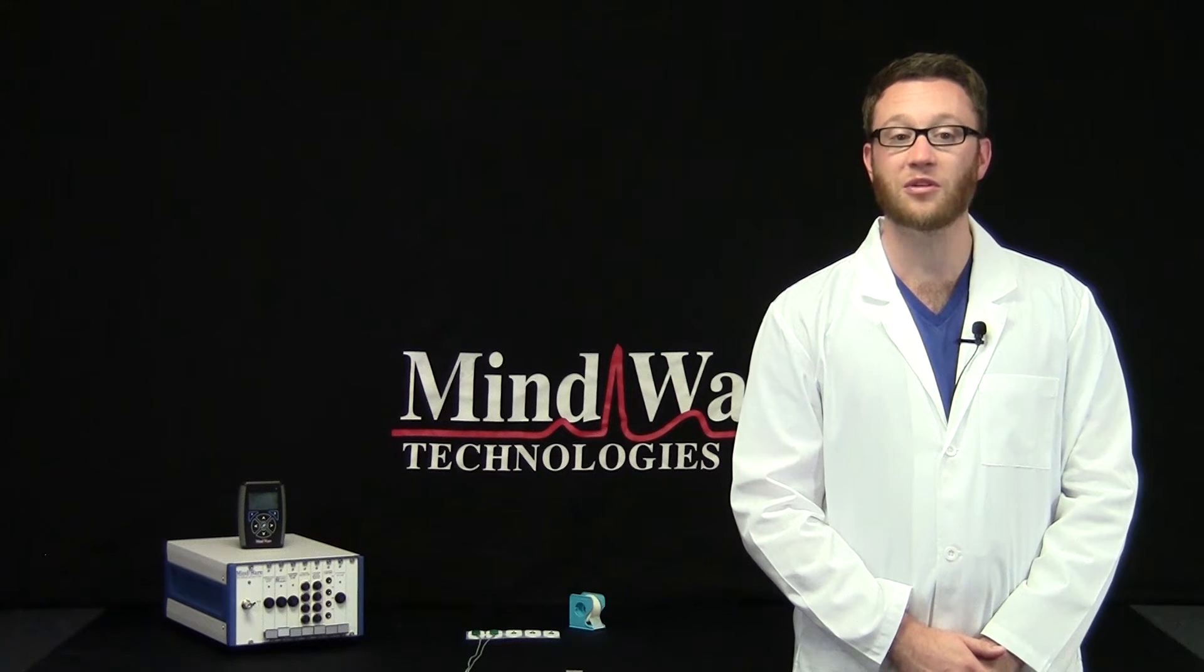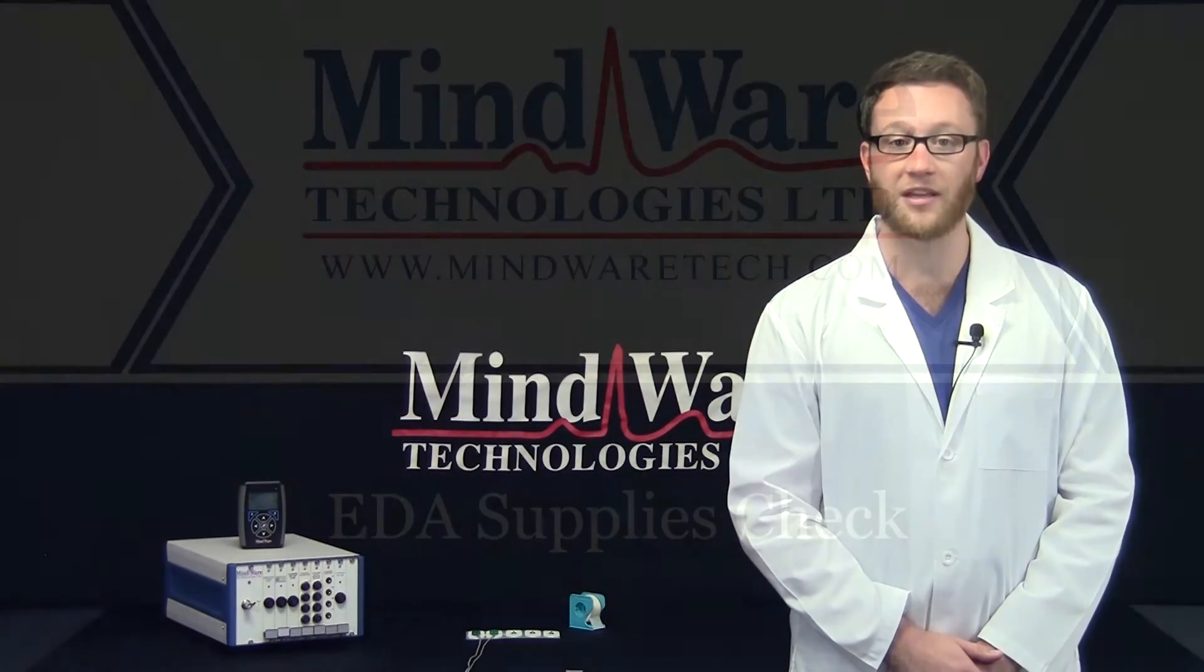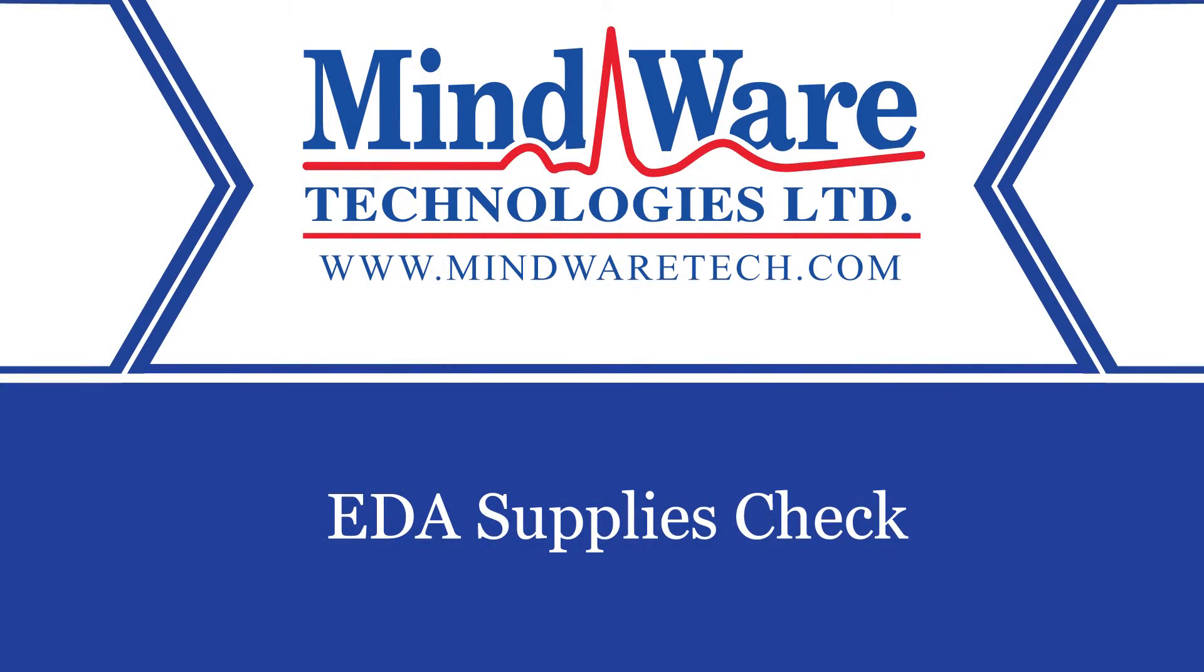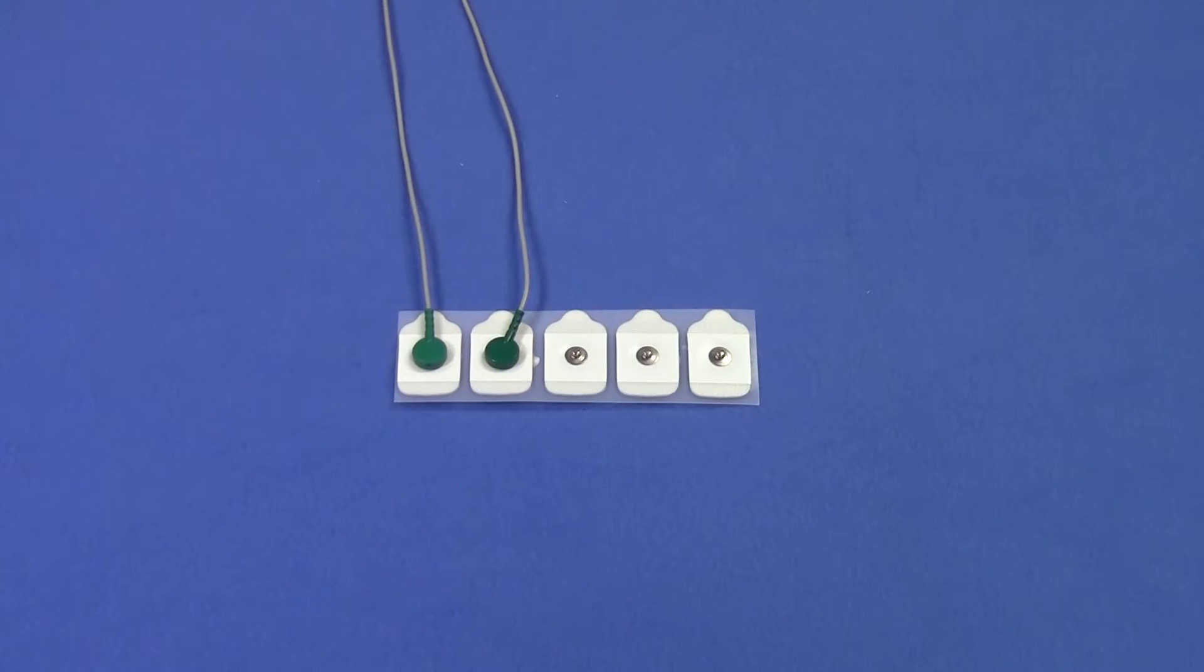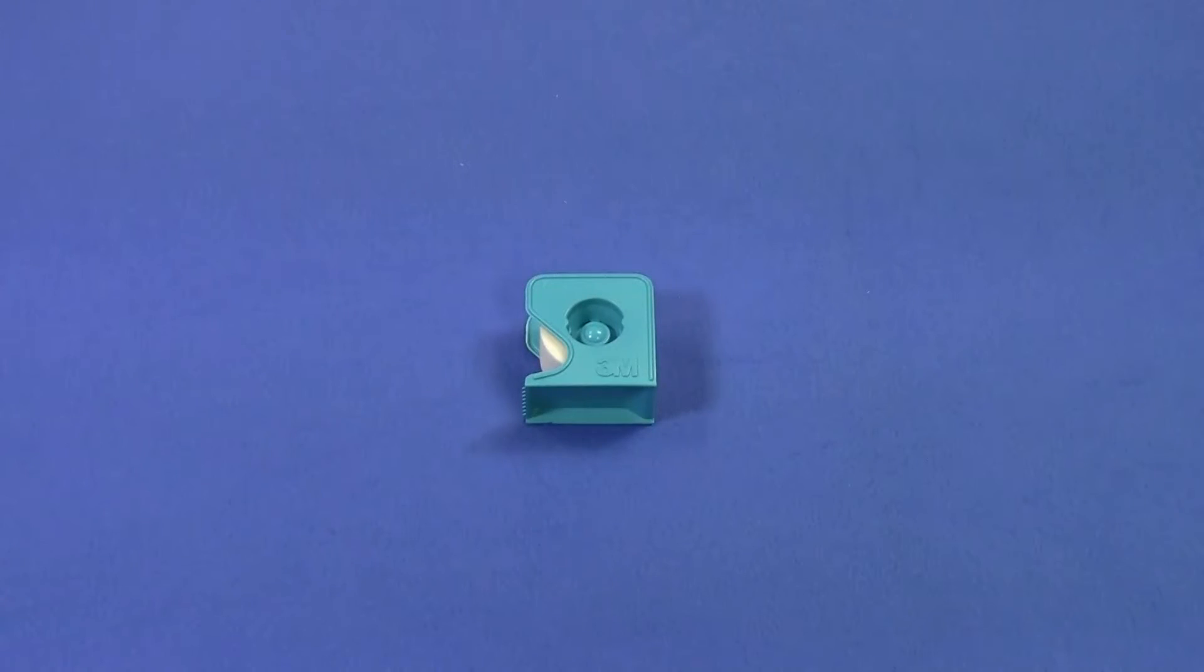First, let's take inventory of the necessary supplies for collecting EDA. To collect EDA, we need two GSC medical sensors or electrodes with two lead wires attached and micropore tape.